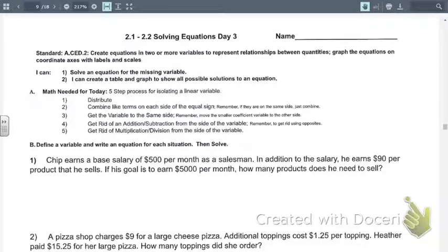Let's highlight some key words. We have his base salary is $500 per month. He earns $90 per product that he sells, and his goal is to earn $5,000 per month. The question says how many products does he need to sell in order to reach that $5,000 goal? So let's define our variables first.